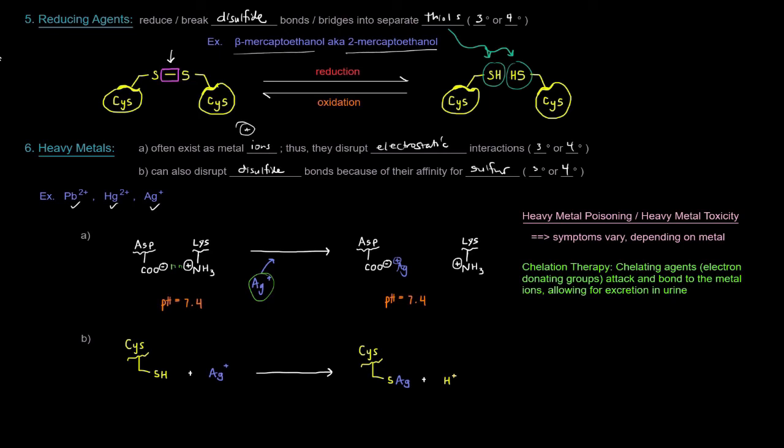So, of course, if that happens to a great enough extent, that can really screw up the protein structure. Also, heavy metals tend to have a really high attraction for cysteines. Now, here I've drawn it just being attracted to a thiol group. So we can see here this kind of displaces the hydrogen that's there, and that hydrogen comes off as an ion. But it can do the same thing with two cysteines that are bound together in a disulfide bond. So heavy metals can disrupt electrostatic interactions and disulfide bridges, and therefore tertiary and quaternary structure.